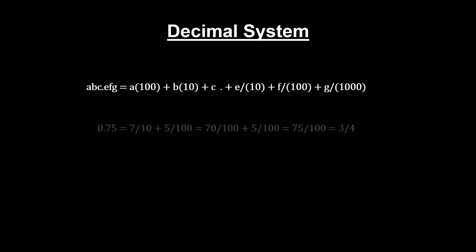This system is easily extended into the decimal number system by dividing by ten for each position to the right of the decimal point. In much the same way, we multiplied by ten for positions to the left. We write abc.efg as this. For example, 0.75 is 7 over 10 plus 5 over 100, or 3 fourths.